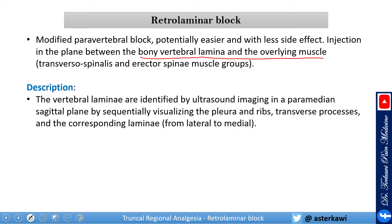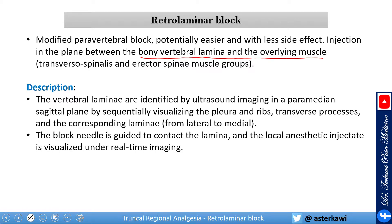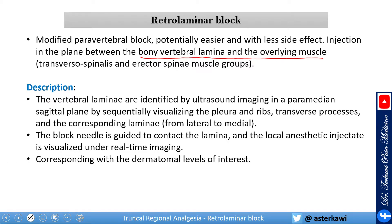Identification is done by sequentially visualizing from lateral to medial: the ribs coming closer to midline, then the transverse process, and finally the lamina. Once you see the lamina, you insert your needle under ultrasound guidance to touch the lamina, and then place your local anesthetic above it.